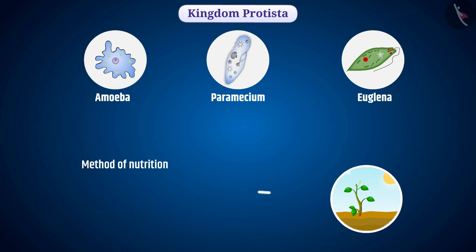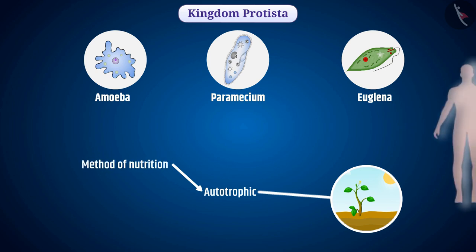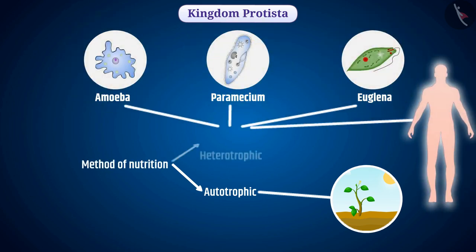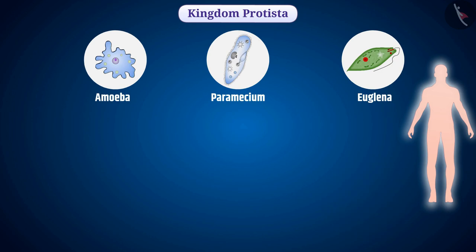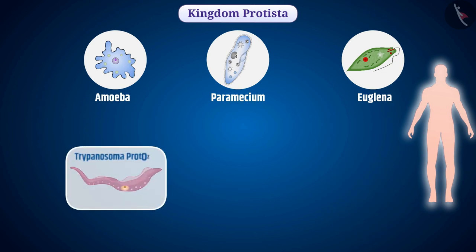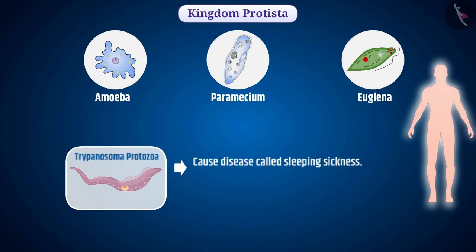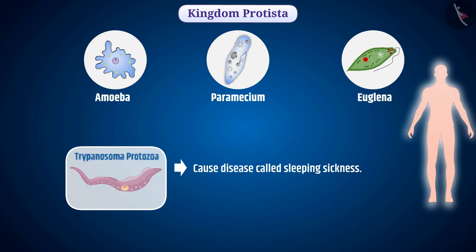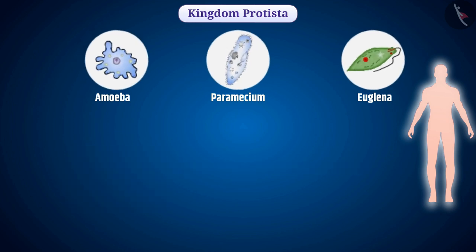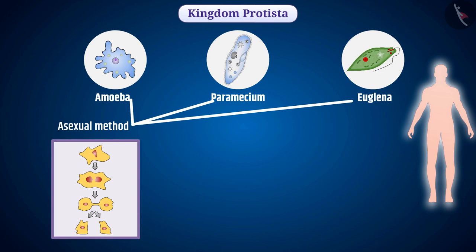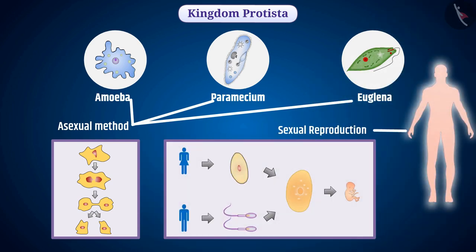The method of nutrition of some of these organisms is autotrophic and the method of nutrition of some organisms is heterotrophic. Some organisms such as Trypanosoma protozoa are parasites which cause diseases like sleeping sickness. Some organisms reproduce by asexual method and some through sexual reproduction. Cell fusion and formation of a zygote are adopted in sexual reproduction.